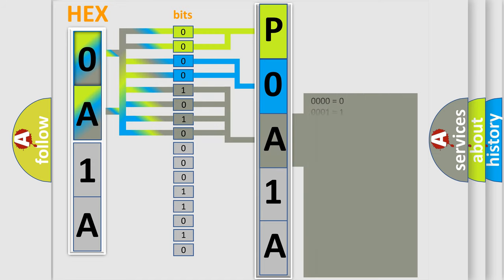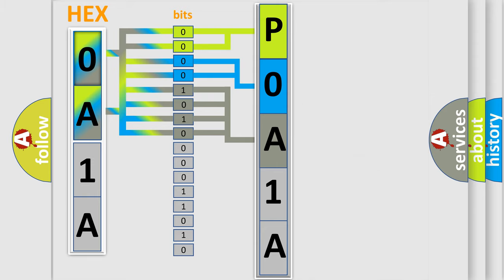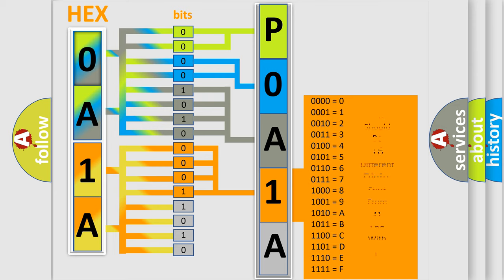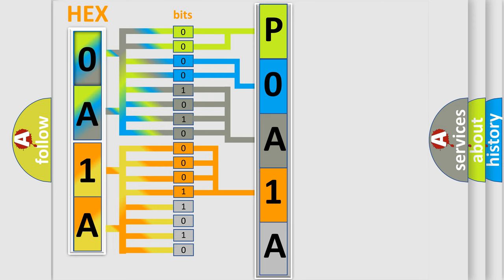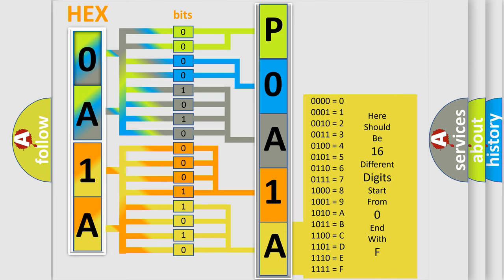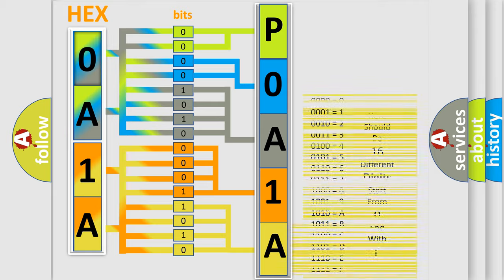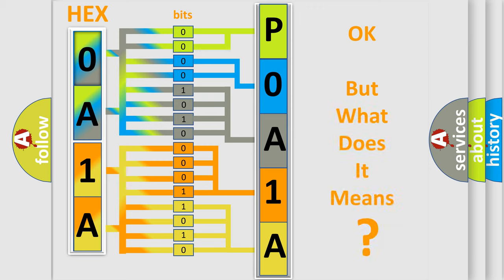The second byte is composed of a combination of eight bits. The first four bits determine the fourth character of the code, and the combination of the last four bits defines the fifth character. A single byte conceals 256 possible combinations. We now know in what way the diagnostic tool translates the received information into a more comprehensible format.